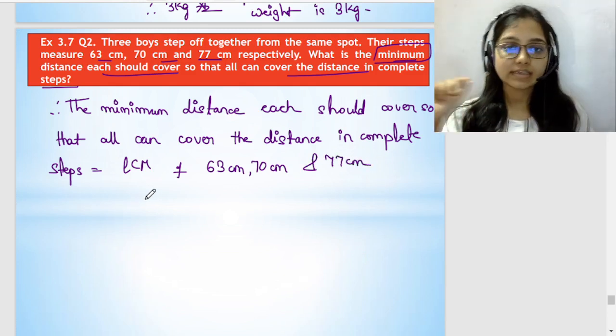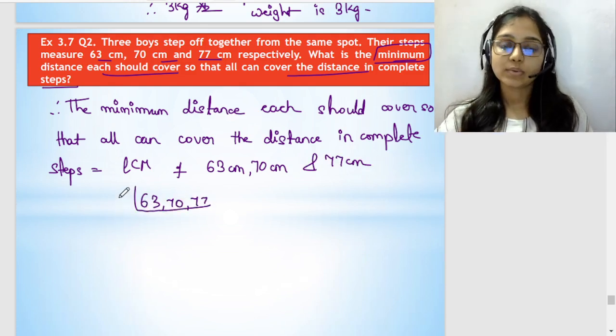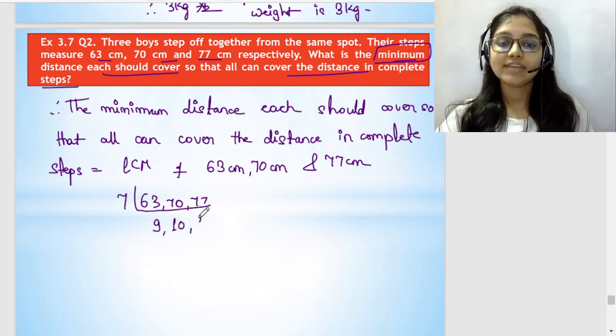So we'll find this using the division method. 63 cm, 70 cm, 77 cm. We can go for 7. 7 times 9 is 63, 7 times 10 is 70, 7 times 11 is 77.